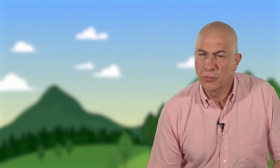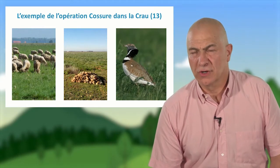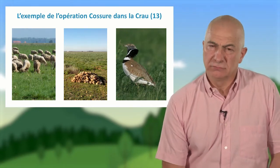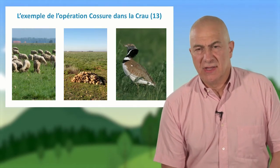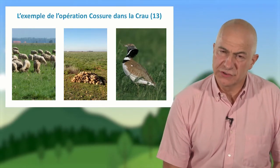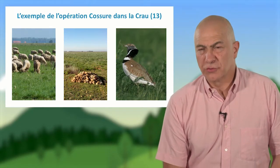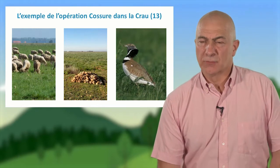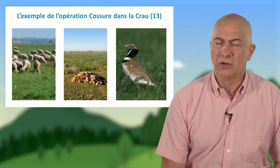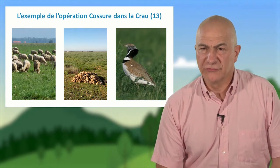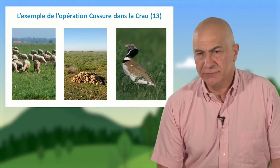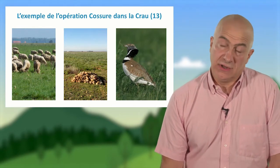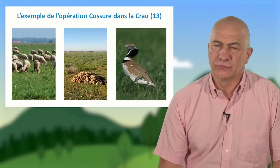C'est ce qu'illustre l'exemple de l'opération Cossure dans la Crau, dont CDC Biodiversité est le maître d'ouvrage. Cette opération de restauration écologique a démarré en 2008 sur 357 hectares et illustre un projet de transformation d'un territoire jusqu'alors dédié à de l'arboriculture intensive, orienté vers de l'agropastoralisme qui associe des objectifs écologiques très intimement liés dans un contexte de développement économique.